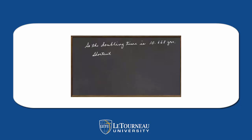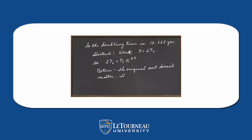Now let's check out a shortcut. What do we want to do? We want P to equal 2 times P₀. So 2 times P₀ equals P₀ times e to the rt. Notice the original amount doesn't matter — all we need to know is when does e to the rt equal 2, and we'll find the doubling time.